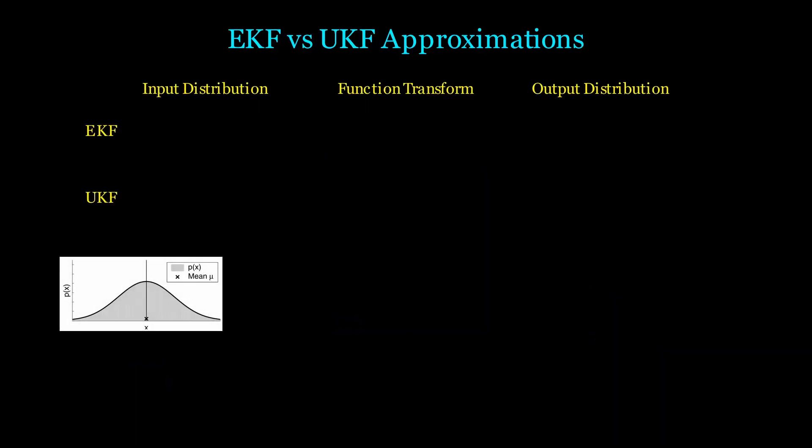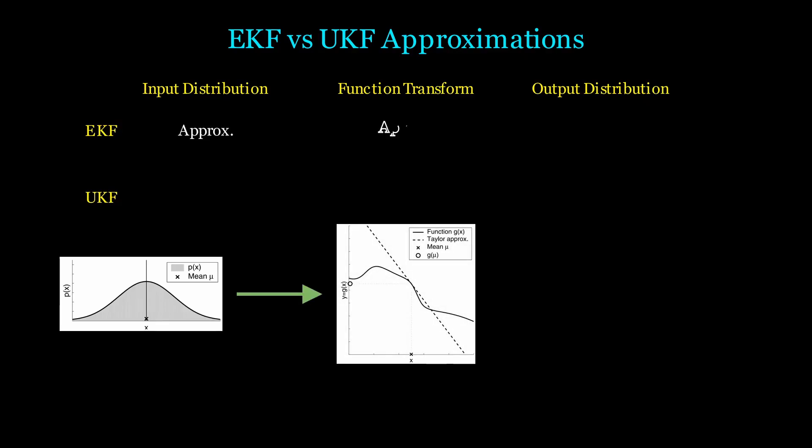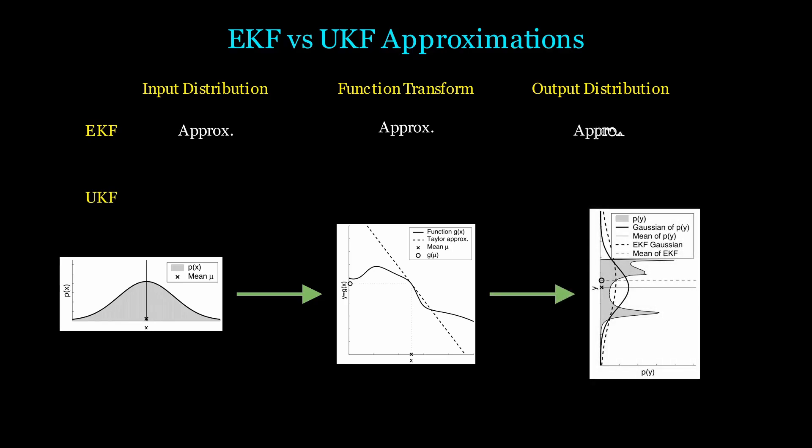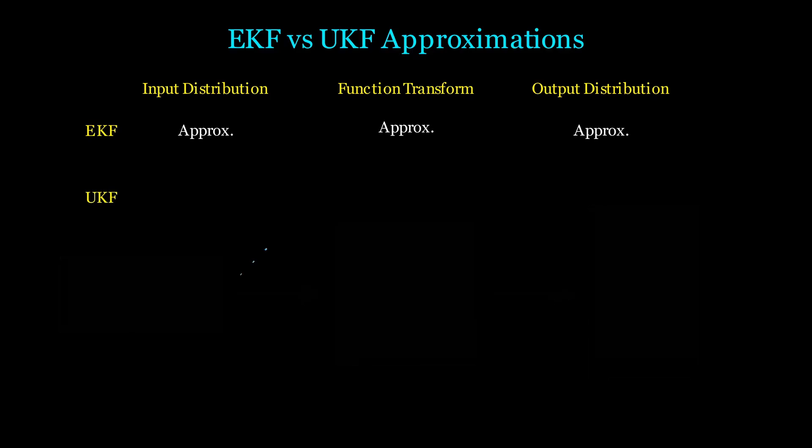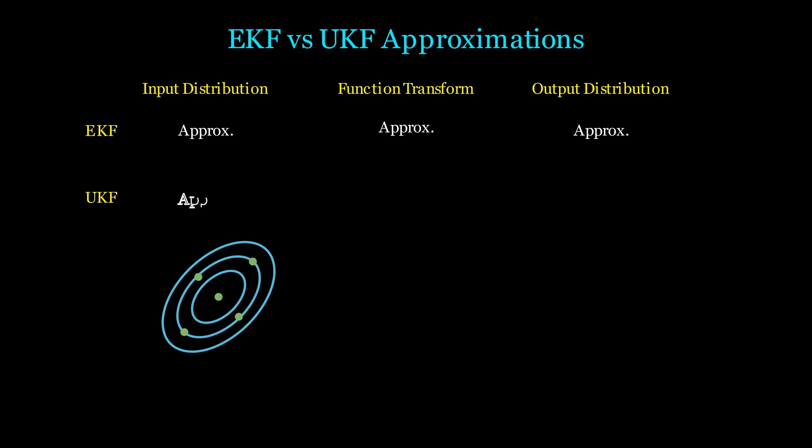In the EKF, we have an initial Gaussian distribution, which is an approximation of the true distribution. We then approximate our transform function and produce another approximated Gaussian distribution. In the UKF, we do indeed start with an approximated distribution, but we pass it through the true transform function, which is why this method is superior.